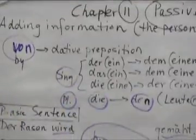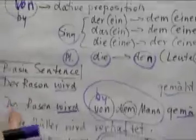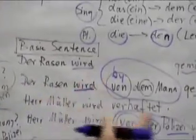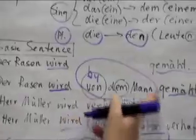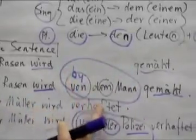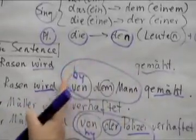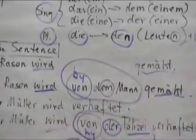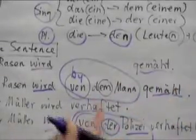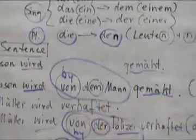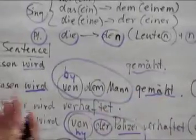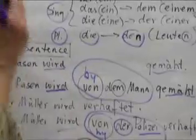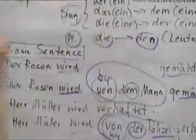To go back to our original sentence: der Rasen wird — then we insert that phrase mentioning the person or thing that does the action, and the last part of the sentence is the past participle. Gemäht in this instance. So, der Rasen wird von dem Mann gemäht. Remember: by whom? Von, with the dative endings.